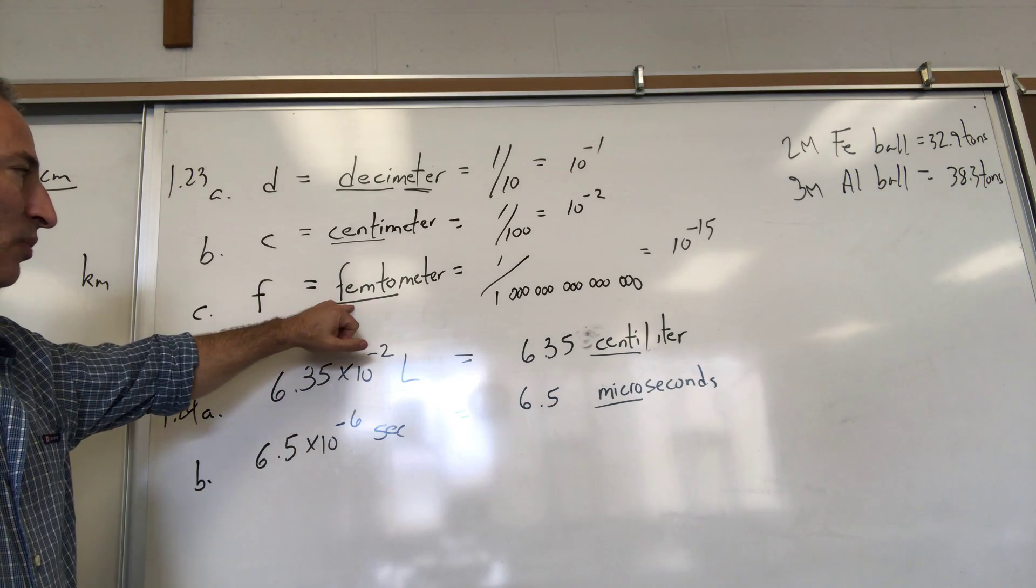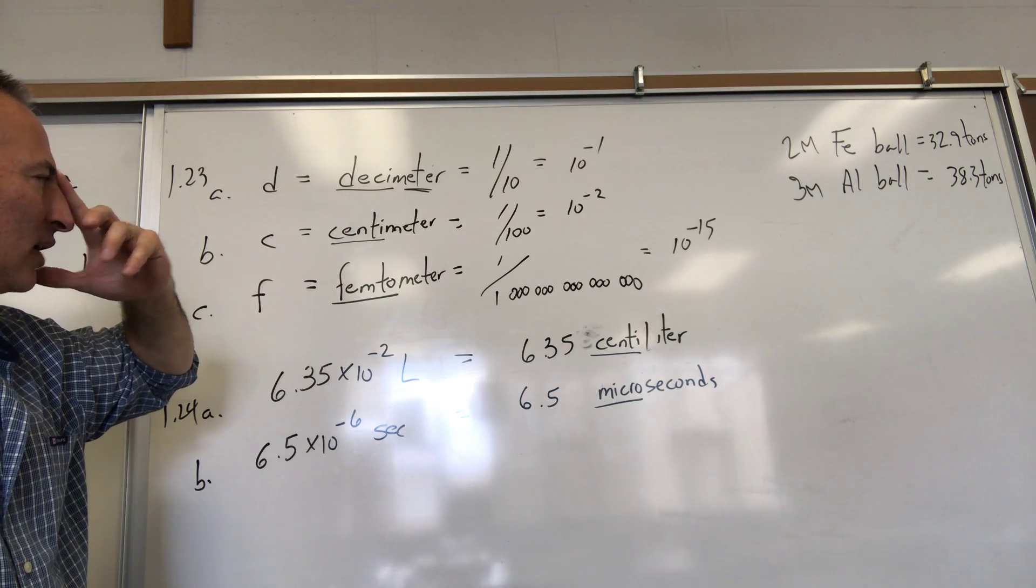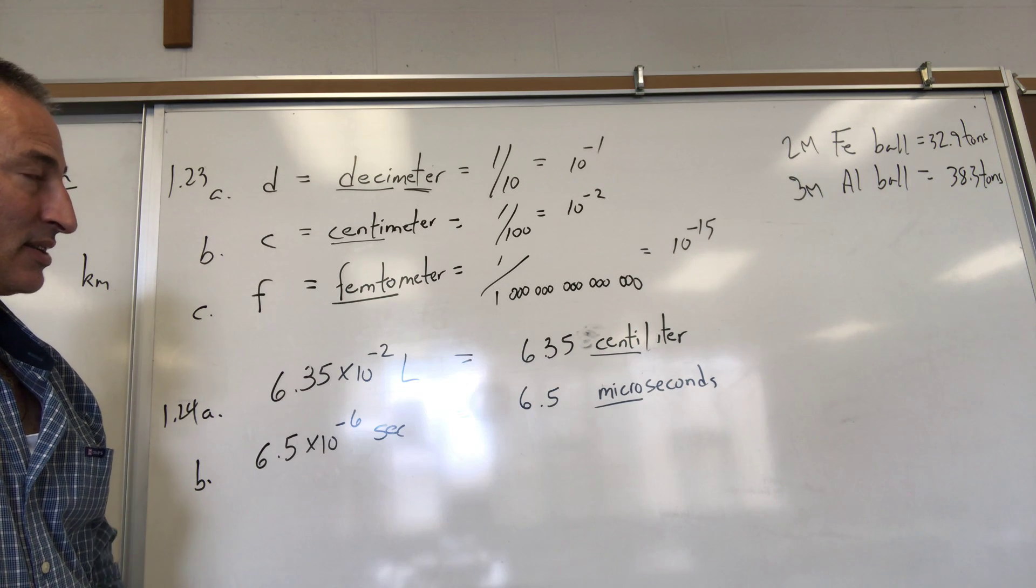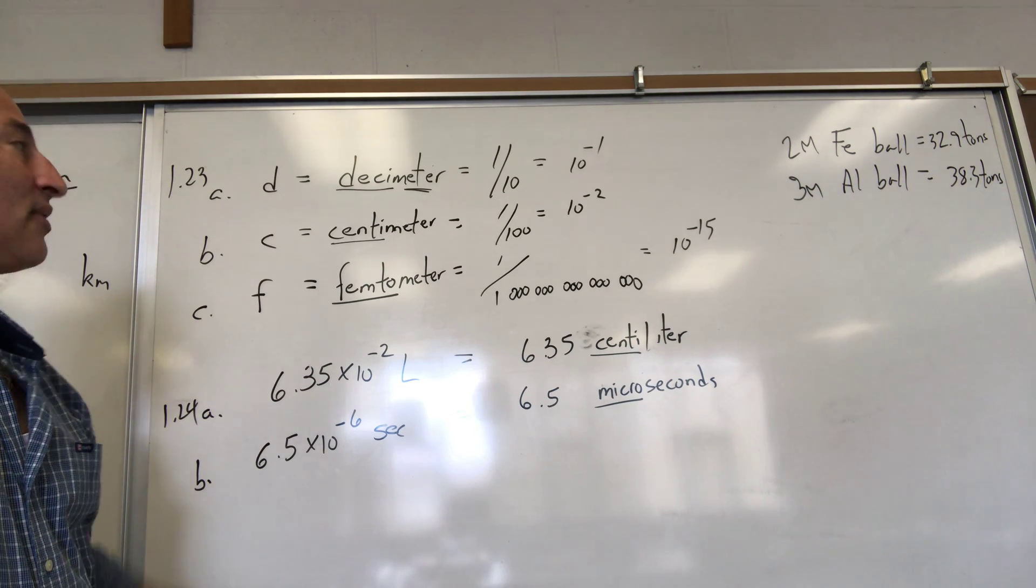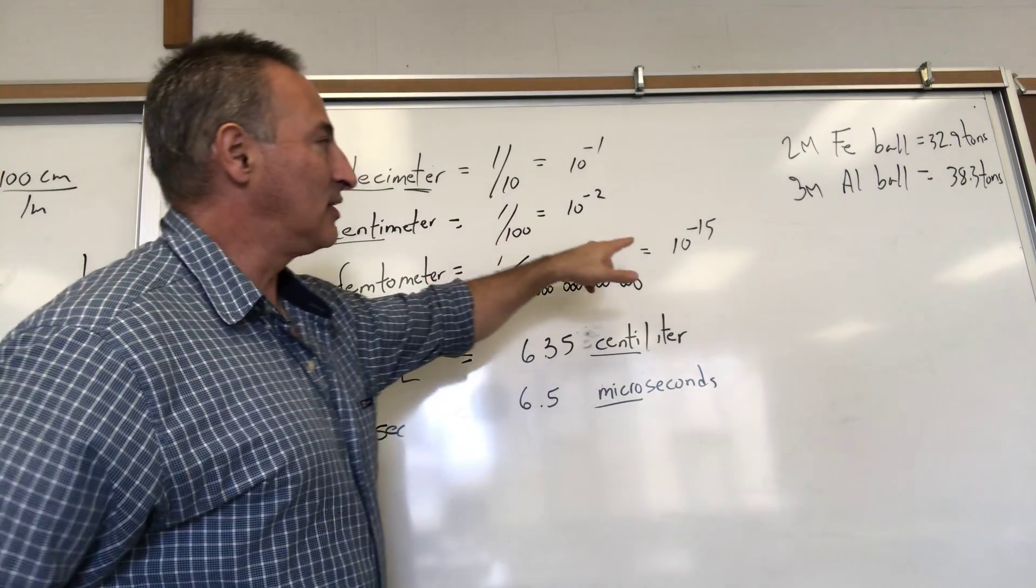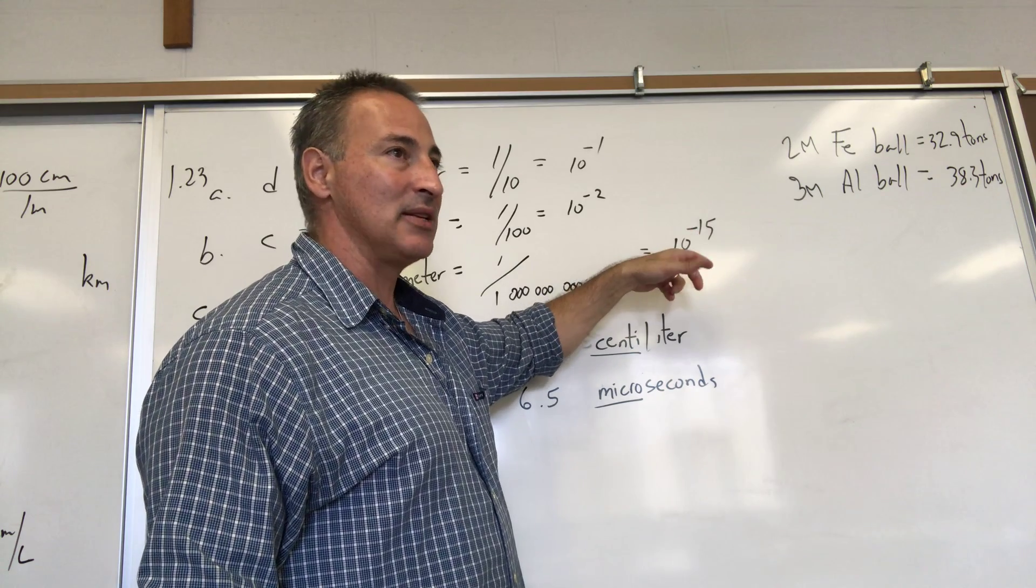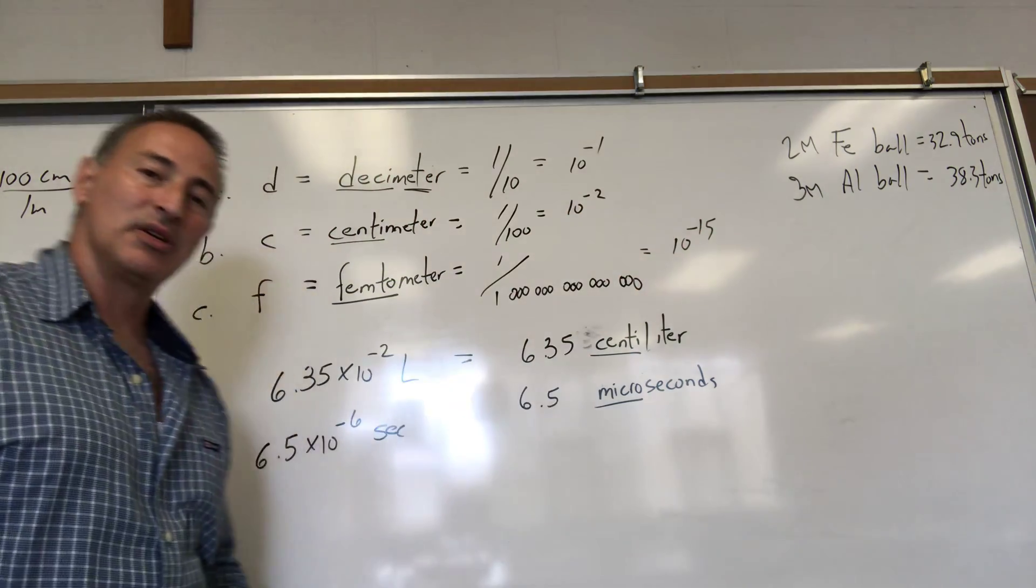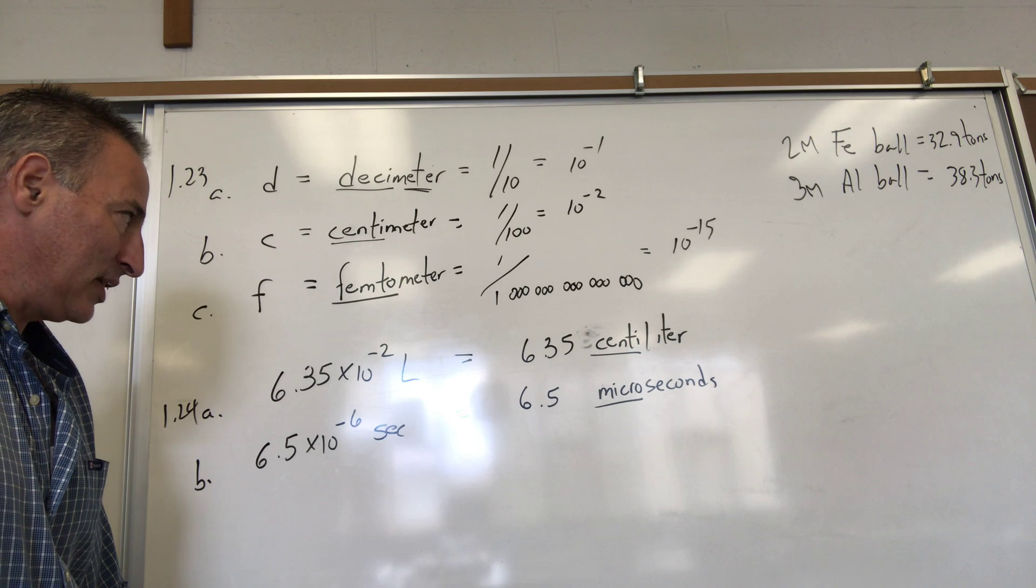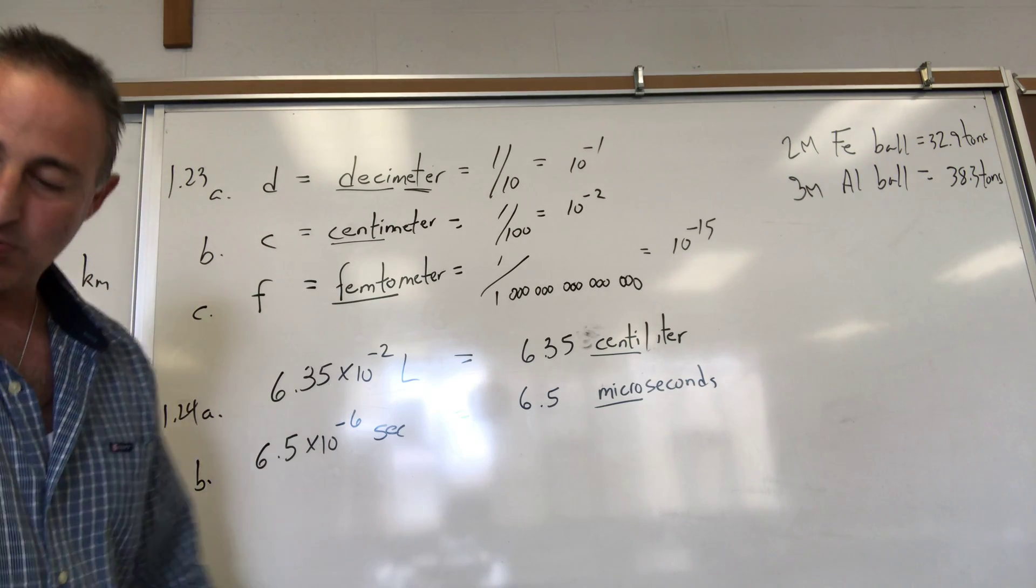Femtometer is a very small amount. It's one quadrillionth, one with fifteen zeros. So you would rewrite that as 10 to the negative fifteen. There are 10 to the fifteen femtometers in a meter because one quadrillionth of a meter is a femtometer, but that means also there are quadrillion femtometers in a meter.